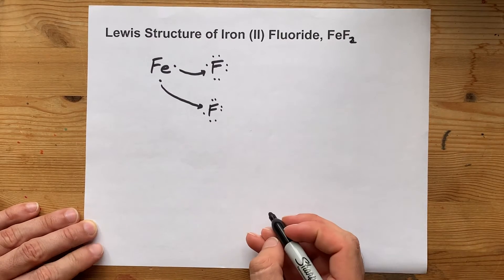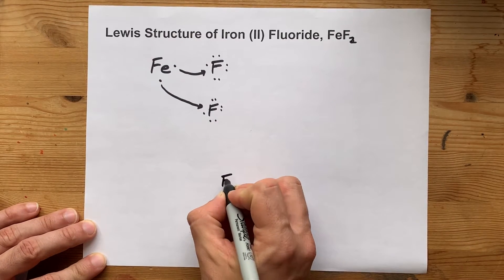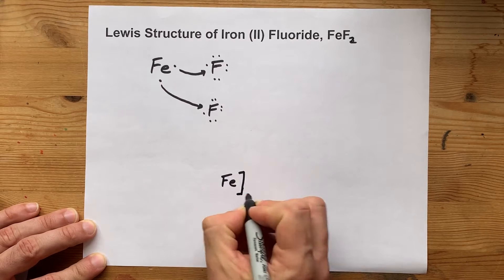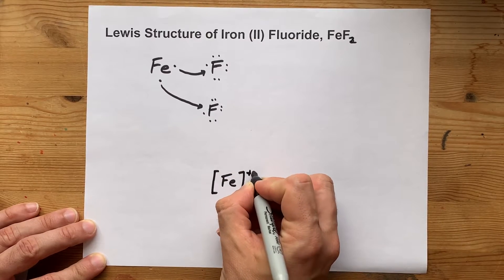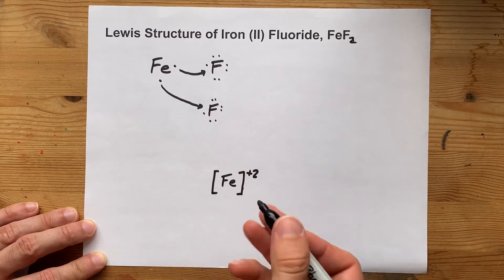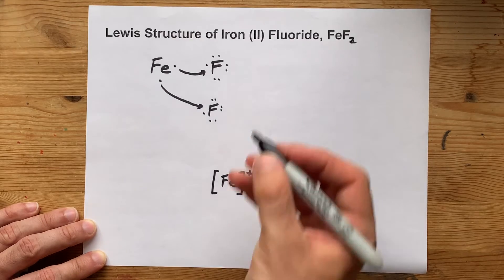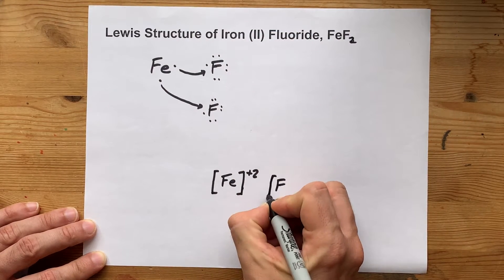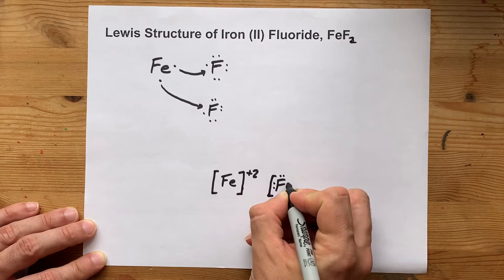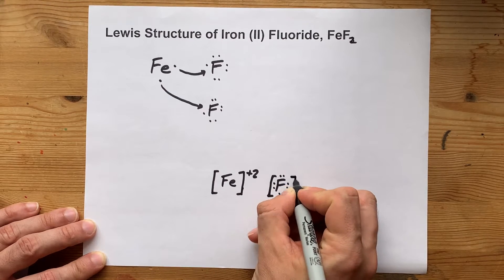The final structure here will have Fe along with its positive 2 charge, since it has given away its 2 electrons. It will also have 2 fluorines shown. Each of those fluorines should have 8 electrons around it.